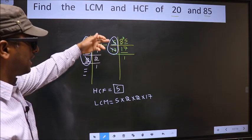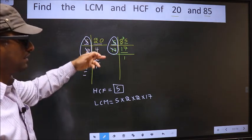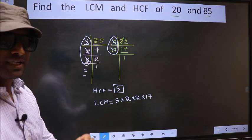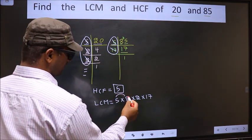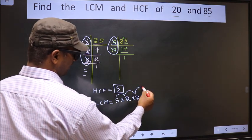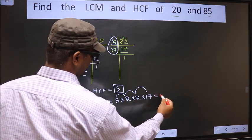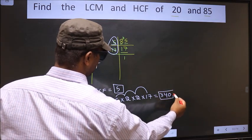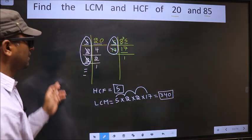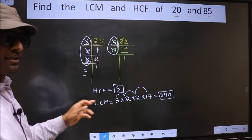Now each number has been cut. Therefore, our LCM is 5 into 2, 10 into 2, 20 into 17, 340 is our LCM. Am I clear?